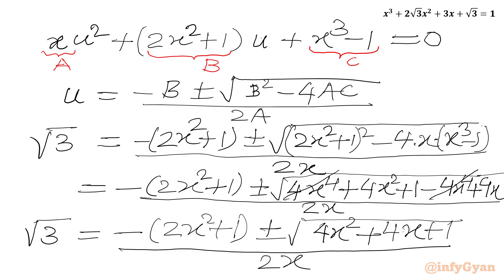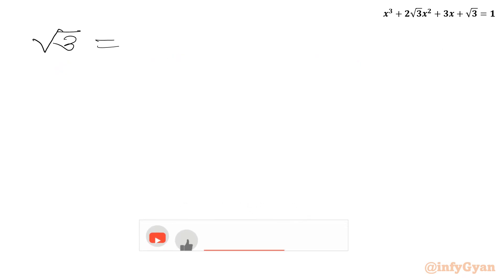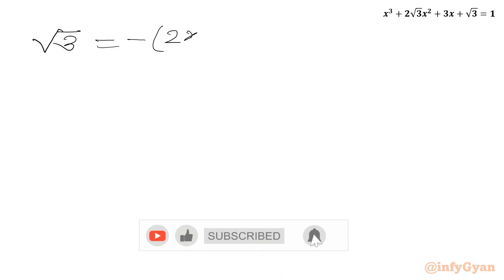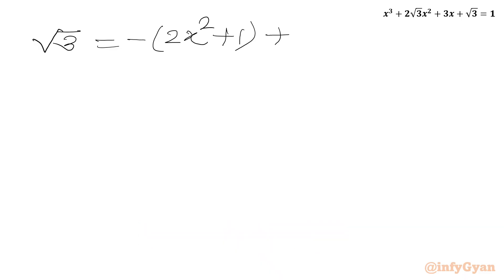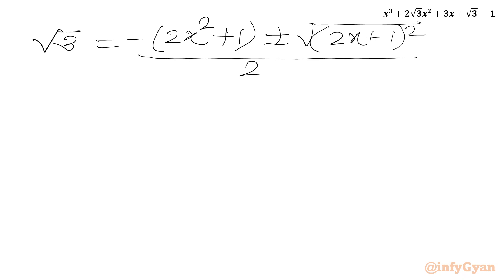Now 4x² + 4x + 1 is a perfect square — it equals (2x + 1)². So the square root of the radicand is simply (2x + 1), giving us: √3 = [−(2x² + 1) ± (2x + 1)] / (2x).